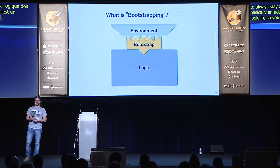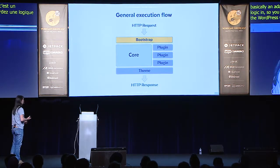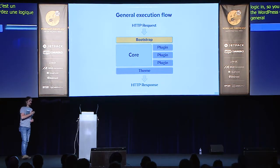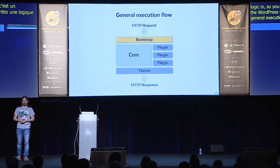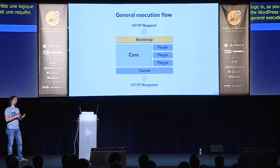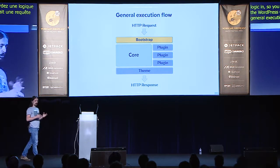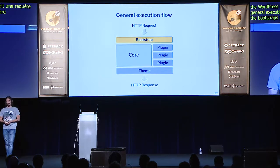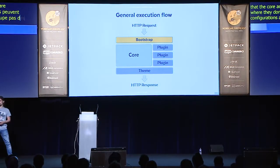The logic in this case is the WordPress core, the WordPress web application. So what we have as a general execution flow is: someone does an HTTP request to your website, which first launches this bootstrap process, and the bootstrap process prepares the environment so that the core, the plugins, and the theme can run in a known environment where they don't need to take care of Windows differences, server configurations, and so forth — and then they produce an HTTP response.